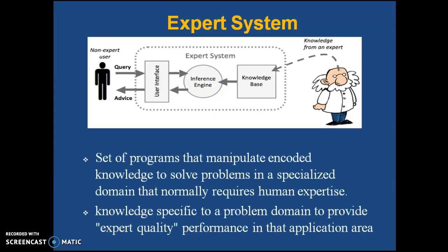An expert system is a set of programs that manipulate encoded knowledge to solve problems in a specialized domain that normally requires human expertise. Say some problem — the solution of such a problem requires human expertise. Such problems can be solved by an expert system by automating everything.